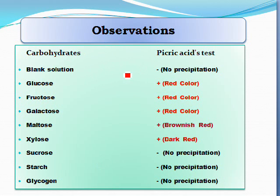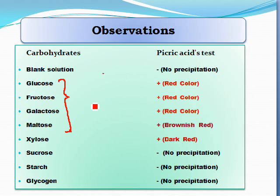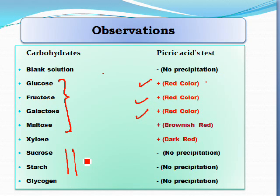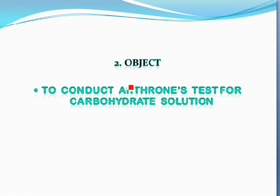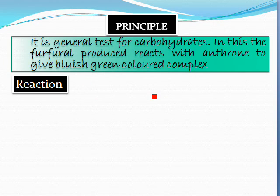In the observation table, only reducing sugars respond positively to this picric acid test by reducing picric acid to picramic acid, giving a characteristic red color precipitate. Non-reducing sugars do not give this test. Now let's move on to the anthrone test.